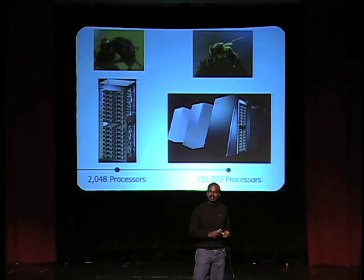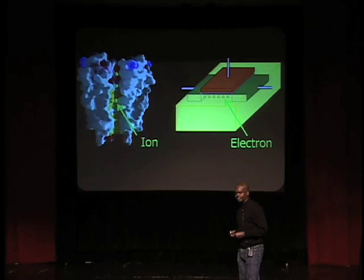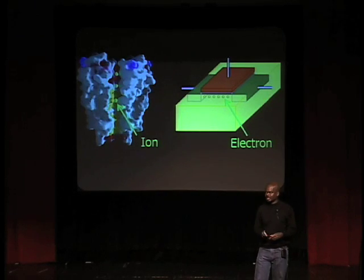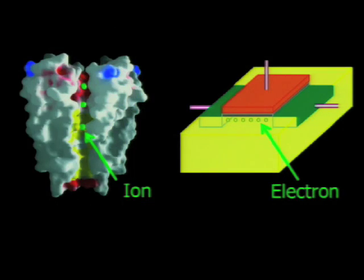My lab is pioneering a radically different approach that can tackle the human brain. Instead of running simulations on these computers, we are emulating directly the flow of ions across the membrane of a neuron with the flow of electrons across the channel of a transistor. This works because the forces that drive ions across a neuron's membrane and those that drive electrons across the transistor's channel are the same. So a single transistor can give us the answer instead of switching thousands of transistors like a digital computer does.